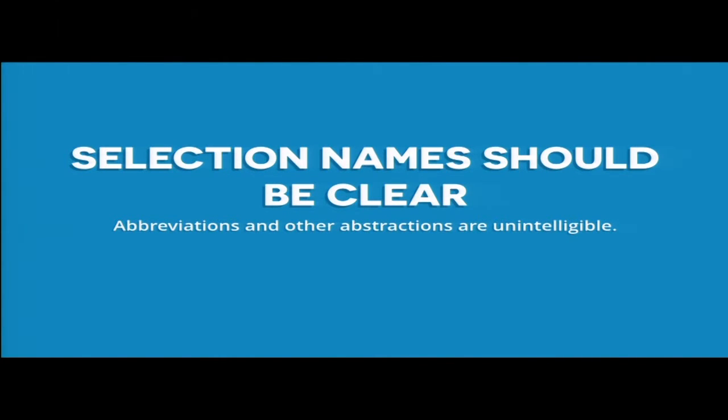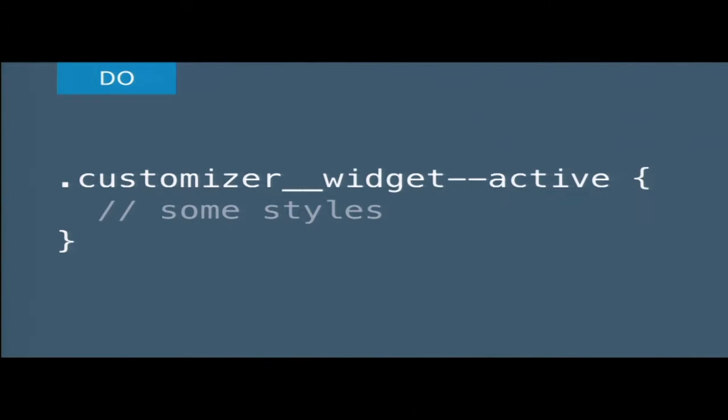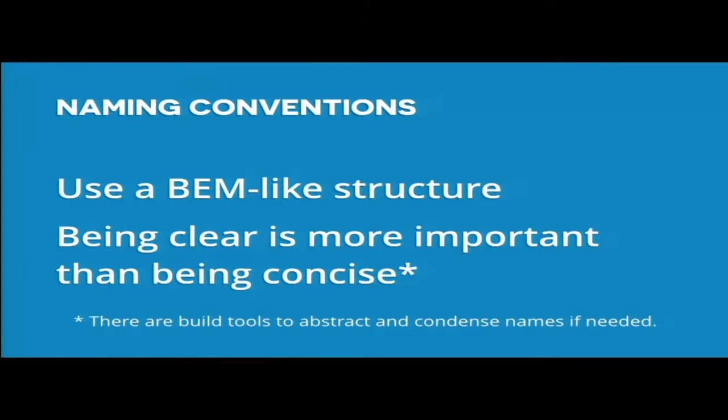One of the biggest things when doing this is to make sure your names are clear — don't try to be efficient and use two-character names or short prefixes. It's just not readable or maintainable. You can use post-processing to obfuscate or make it really efficient if you really want. For example, 'customizer-widget--is-active' — you can actually read it. So use BEM and being clear is pretty important.